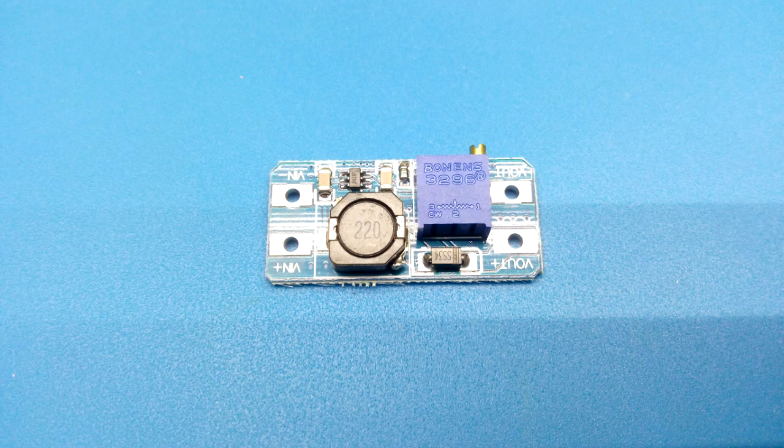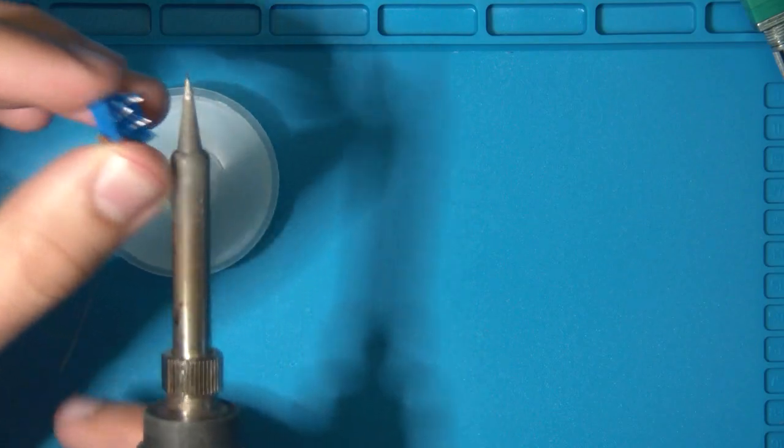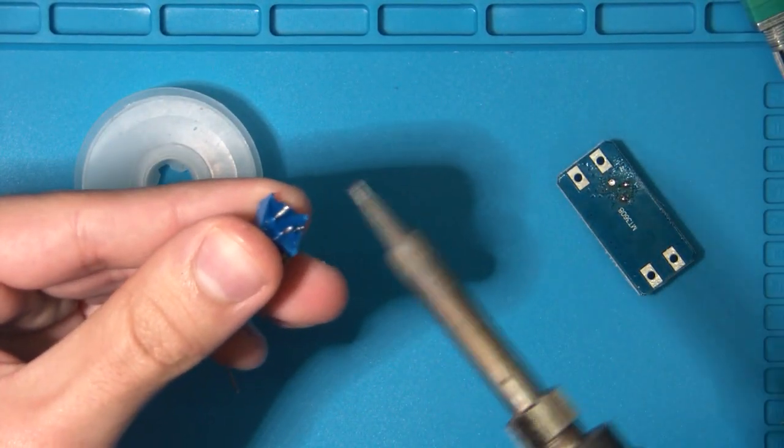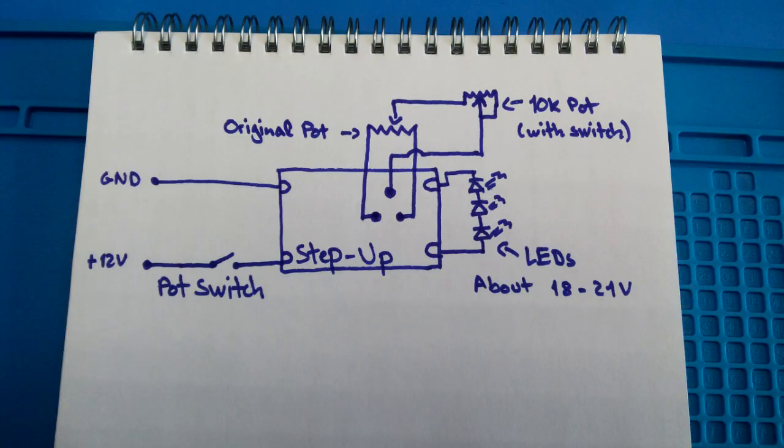To drive the ring I used an MT3608 step-up module. I removed the pot and inserted a 10K pot with switch in series, which will allow me to adjust the LEDs brightness in between a small range. Everything was wired as shown in this schematic. The switch is used to cut the power to the module.